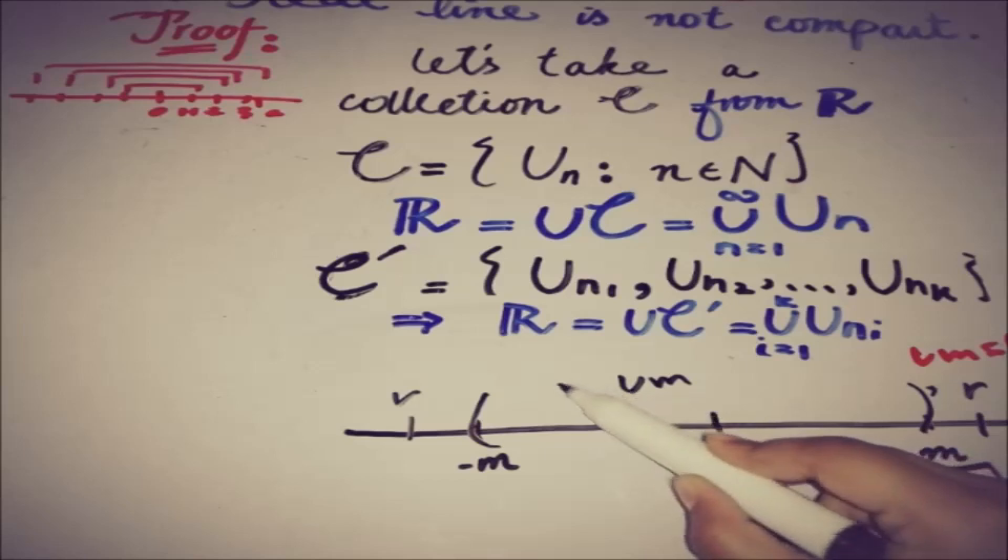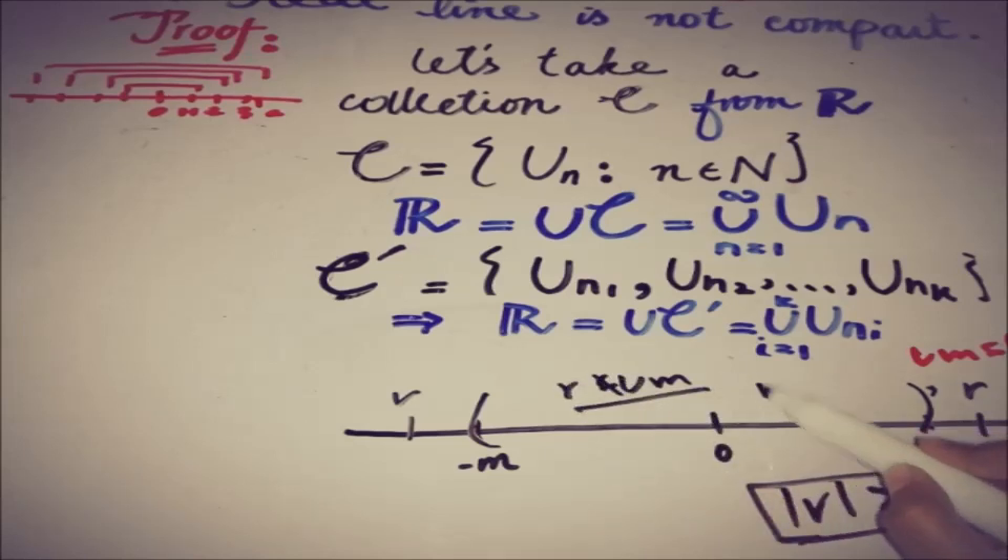such that the magnitude of r is greater than m, this thing implies that r is not a member of that Um from this side to this side, and r is not a member of this, but r belongs to ℝ. So this is not possible if ℝ equals Um.